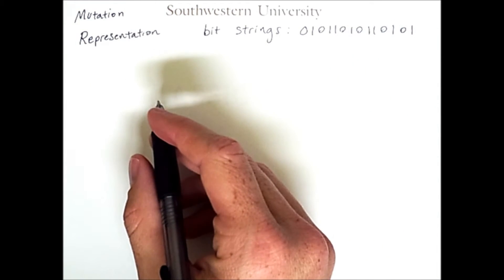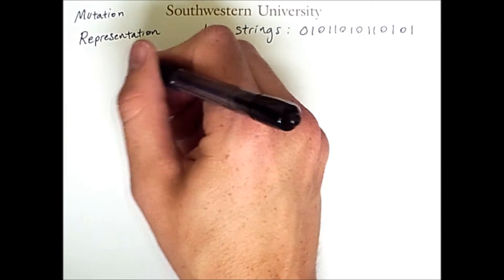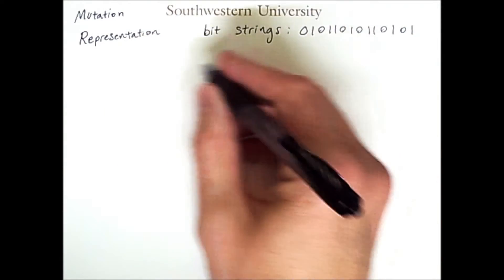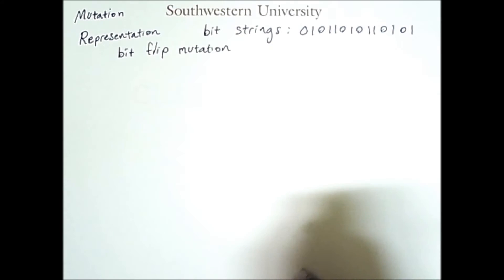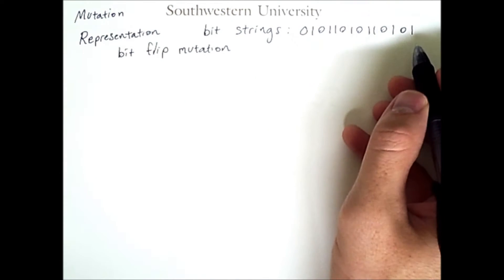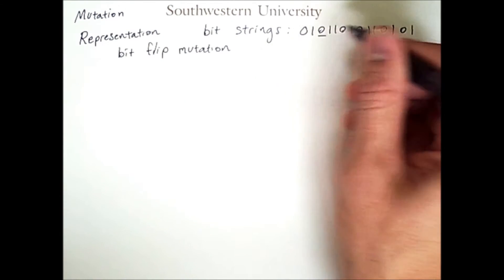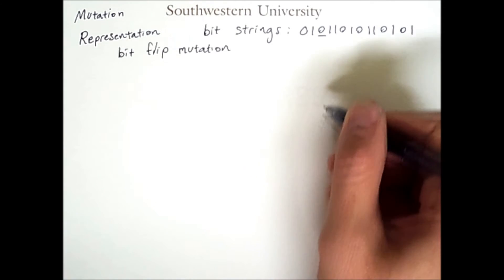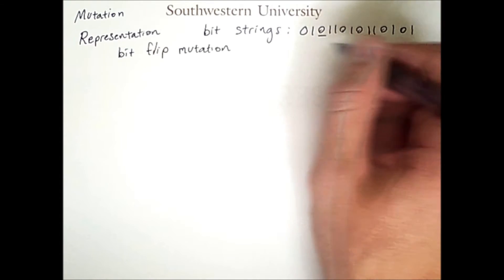Now, if you are mutating bitstrings, it is common to simply flip a bit as a mutation. In this bitstring, if this bit were mutated with a bit flip, it would simply change it from a 0 to a 1 to get the following.